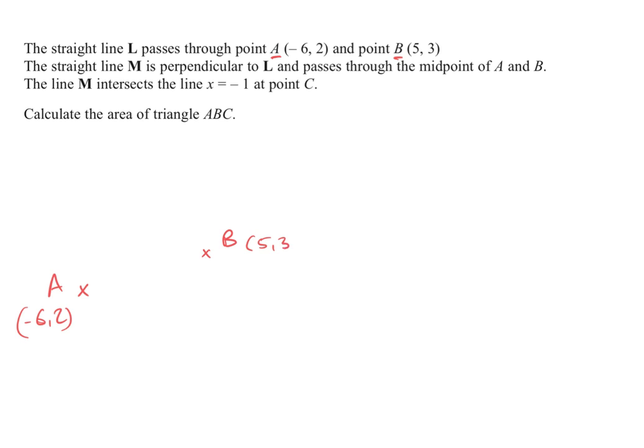Here's (5, 3), and they are joined by a straight line, and that straight line is called L. And we have the straight line M, which is perpendicular to L, passing through the midpoint. So I'm going to need to mark on the midpoint of my line, which is going to be here, such that this length is the same as this length. And then I'm going to draw my line M. It's perpendicular to L. That's my line M.